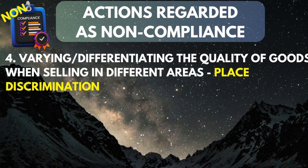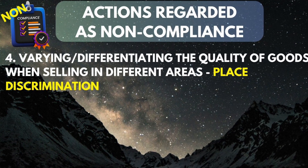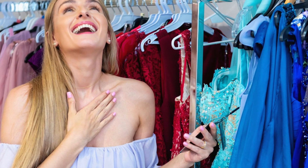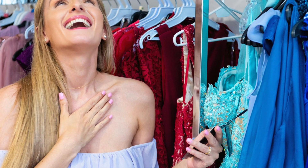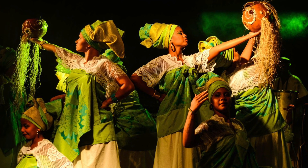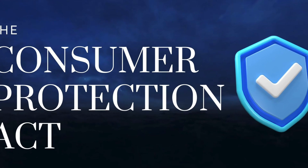The fourth point of non-compliance: when you vary your quality of goods when selling to different areas. If you are selling certain dresses in one area and the quality of your dress is not the same as in another area, and the variation is due to your raw materials — varying your quality of goods is conducting non-compliance.